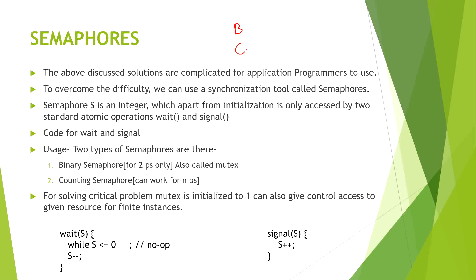Counting semaphore will take care of n type of processes, so it will work for n processes. Binary semaphore will work for only two processes.